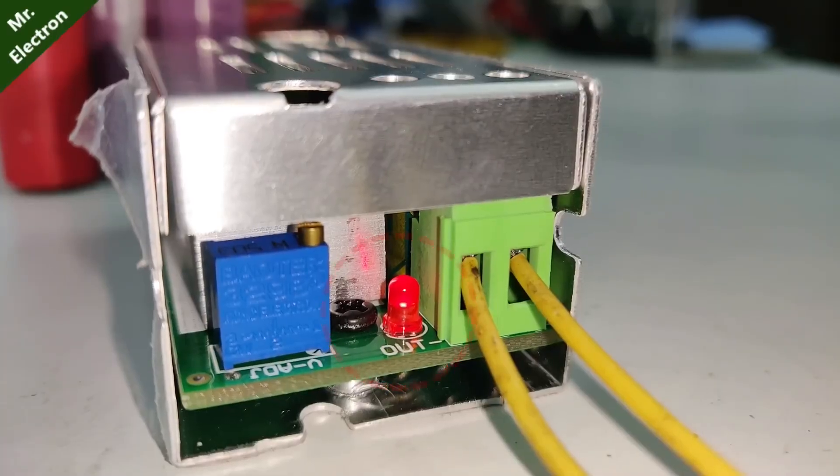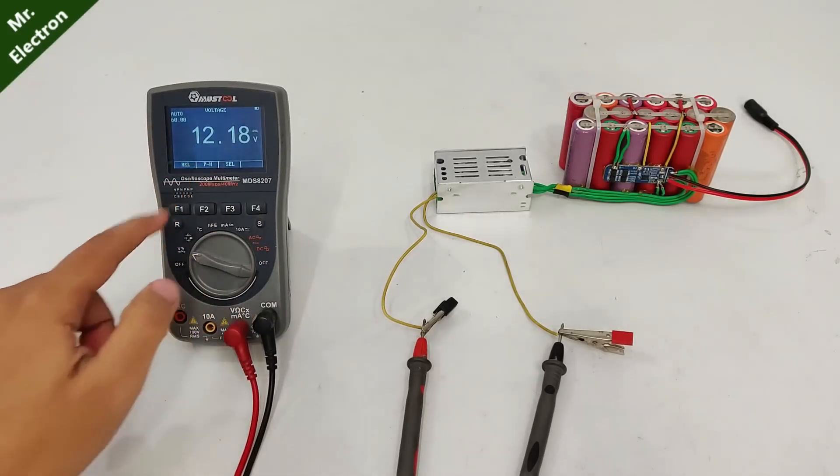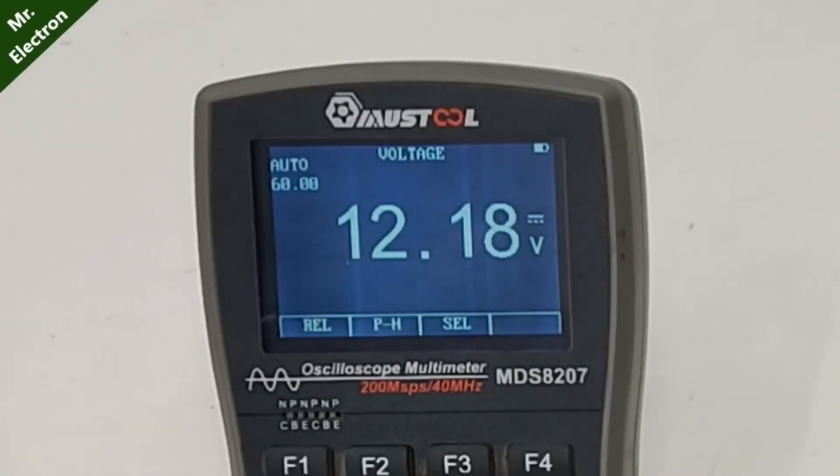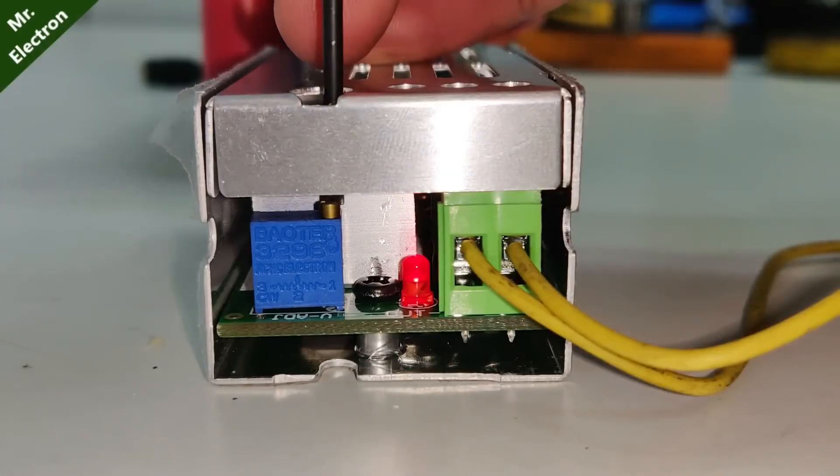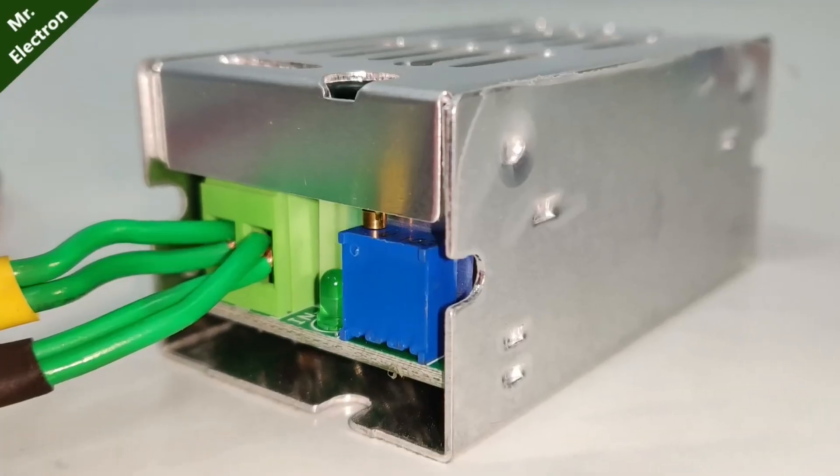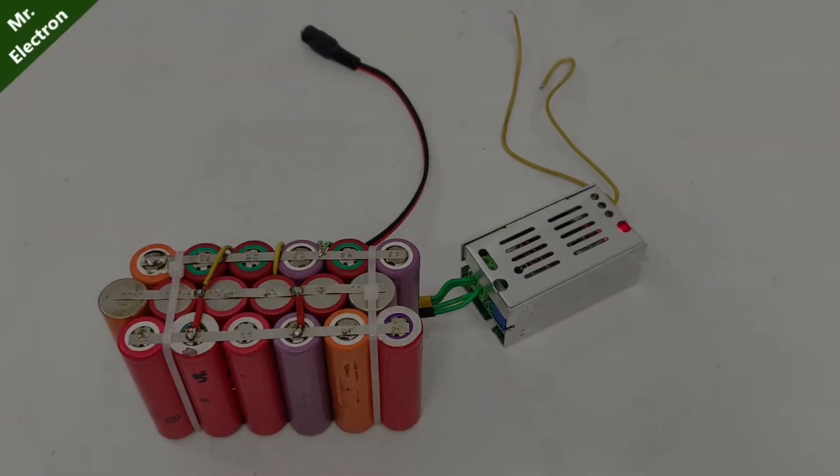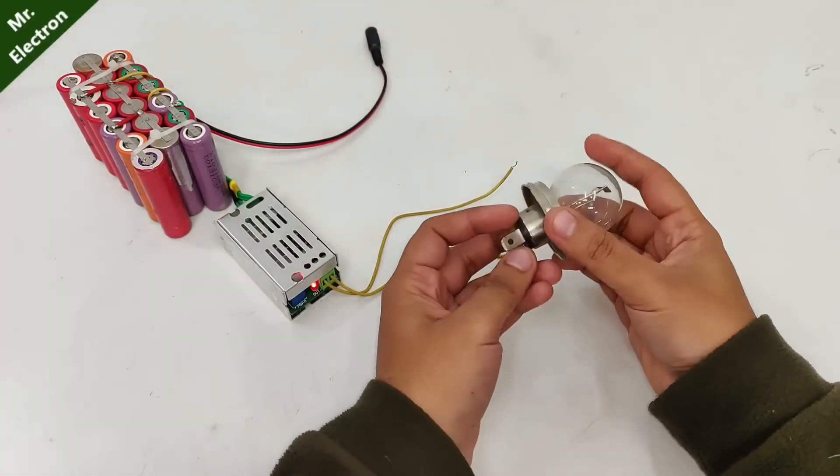Now to the output I have connected this multimeter, and the default voltage is 12.18 which we can change with the potentiometer knob, and I'm going to set it to 14 volts. Now there is another potentiometer at the input side for current adjustment. So take a bulb, this is 40 watts, and connect it to the output.